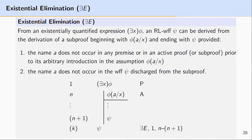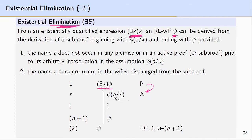Let's talk through the formulation of the rule. The first thing to note about existential elimination is that it's an elimination rule. This means that we reason from an existentially quantified formula to another formula. How existential elimination works is we begin with an existentially quantified formula, and then we make an assumption based upon it. That assumption involves removing the existential quantifier and replacing the existentially quantified variables with names.